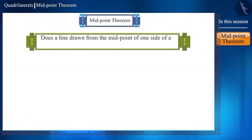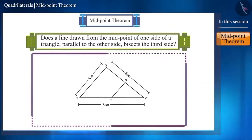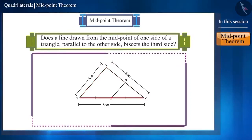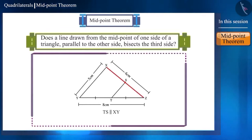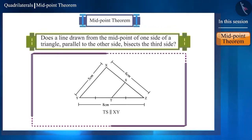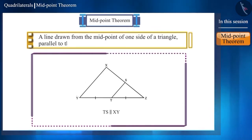Does the line drawn from the midpoint of one side of a triangle, parallel to the other side, bisect the third side? Friends, you can perform an activity for this. In triangle XYZ, side YZ is 8 cm, side XZ is 6 cm and side XY is 5 cm. Point T is the midpoint of side YZ and line segment TS is parallel to side XY. You will see that point S is the midpoint of side XZ, and the length of line segment TS is half the length of side XY. You can repeat this activity for other triangles. You will come to the conclusion that the converse of the theorem is also true: a line drawn from the midpoint of one side of a triangle parallel to the other side bisects the third side.